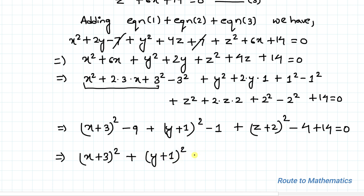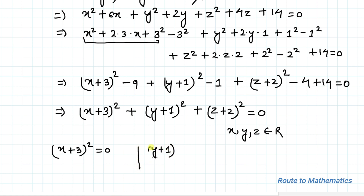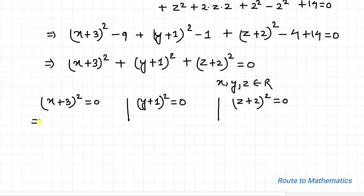So we have (x+3)² + (y+1)² + (z+2)² = 0. Since x, y, z are real numbers, the sum of squares of real numbers equals zero only when each individual term equals zero. Therefore: (x+3)² = 0, (y+1)² = 0, and (z+2)² = 0, which gives us x = -3, y = -1, and z = -2.